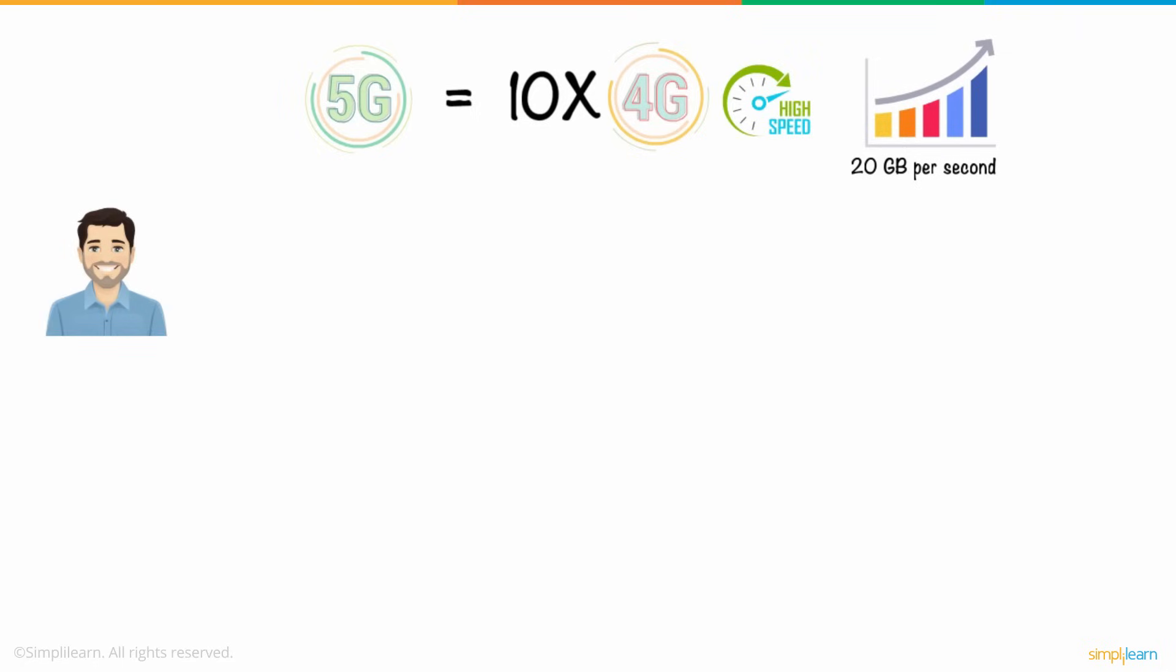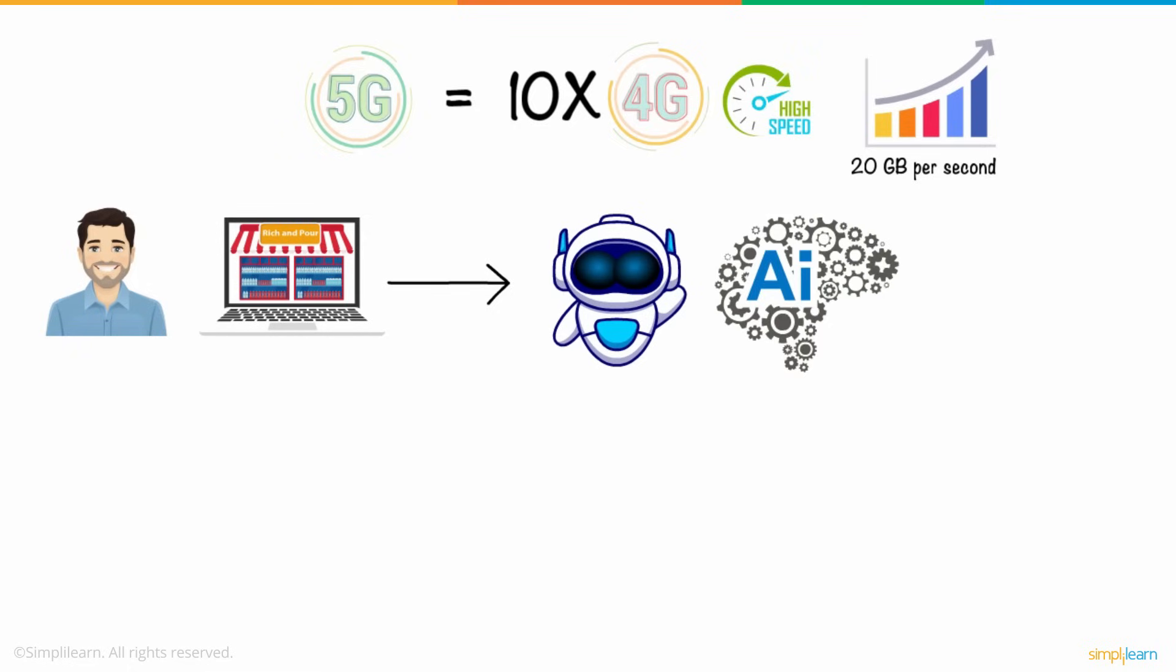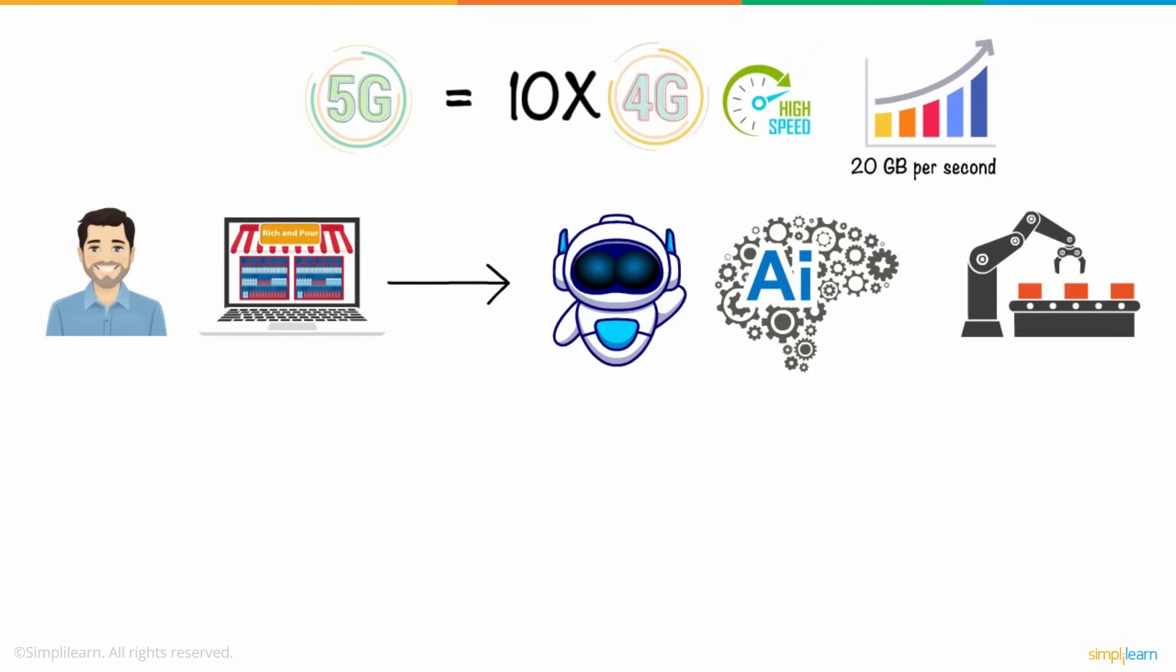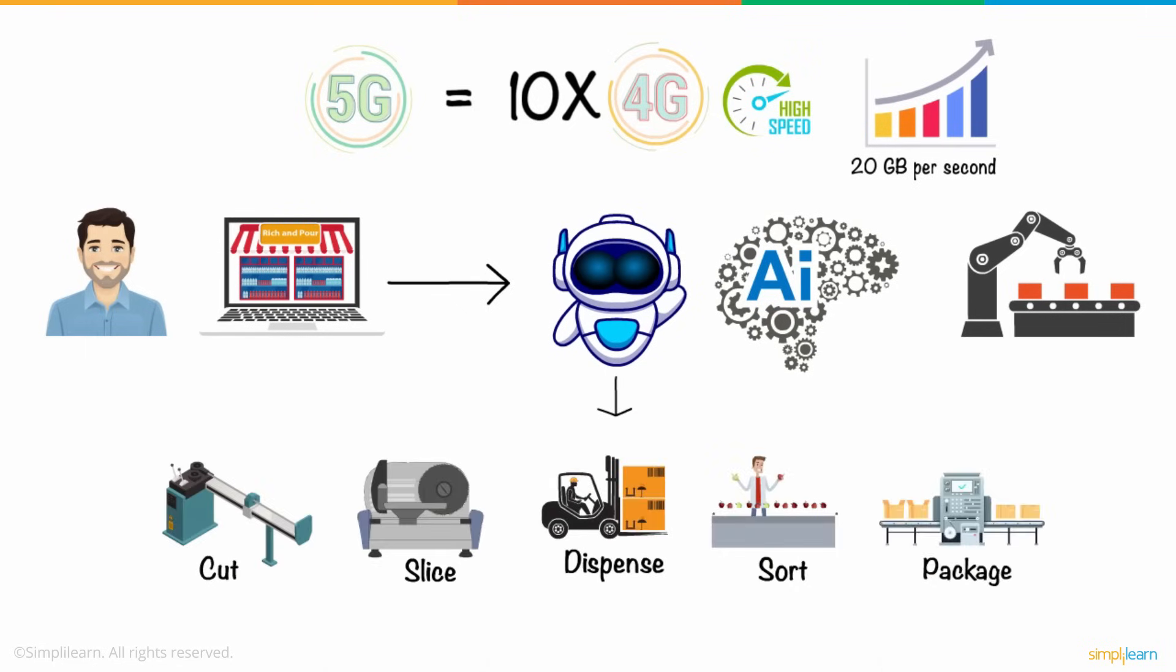thereby reaching a peak speed of 20 gigabytes per second. He realized that 5G could really transform his business by using robotics and AI to pick and place raw and processed foods. Robots enabled with 5G could also help him cut, slice, dispense, sort,